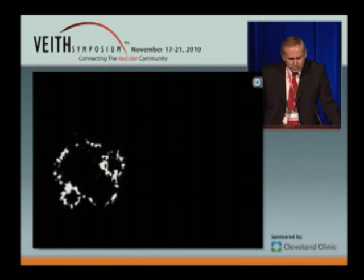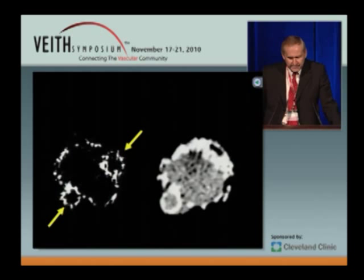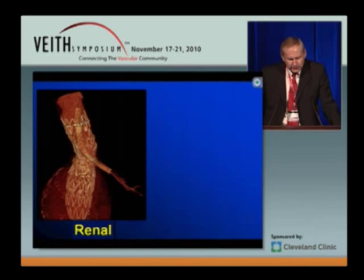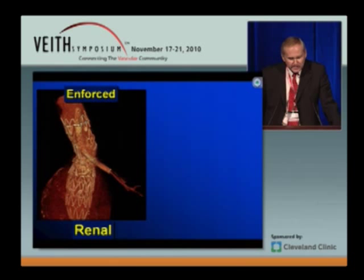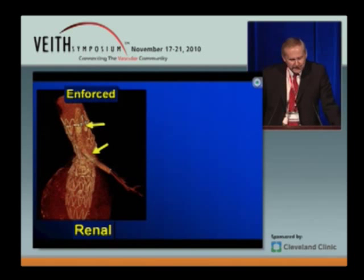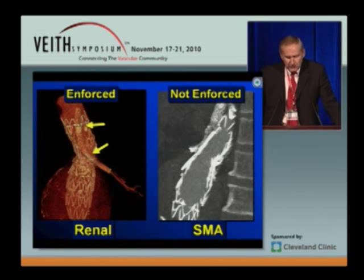If you use long chimneys, you must make sure that the chimneys are not being compressed. In this case, the left renal chimney was fine, but the SMA got compressed. The reason was that the renal one was enforced by balloon-expanded stents in strategic segments where we suspected that compression may occur, while the SMA chimney was not enforced and therefore became compressed.